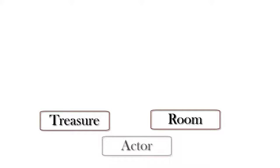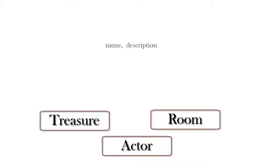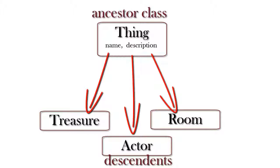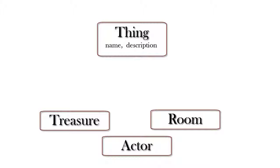You'll probably have treasures of some sort, and you'll certainly have locations or rooms. And you may have characters — let's call them actors — and the primary actor will be the person playing the game. Now, each of these classes will have a name and a description. So I'll create a base class called Thing, with a name and a description. Don't worry what name and description are — to some extent, that may depend on which programming language you decide to use. But they're probably going to be either variables or properties, by which I mean a combination of a private variable and a public accessor method for getting or setting the value of a variable.